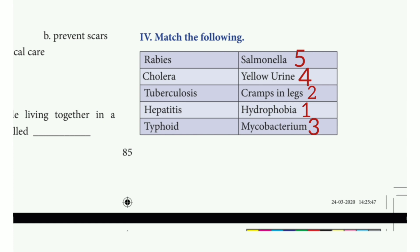2nd one: Cholera — the answer is cramps in legs. 3rd one: Tuberculosis — the answer is Mycobacterium. 4th one: Hepatitis — the answer is yellow urine. 5th one: Typhoid — the answer is Salmonella.